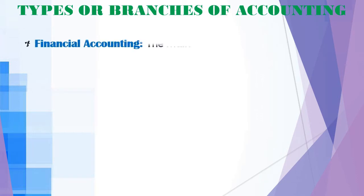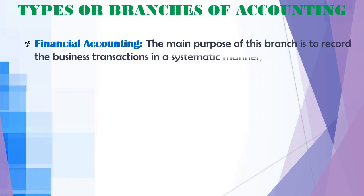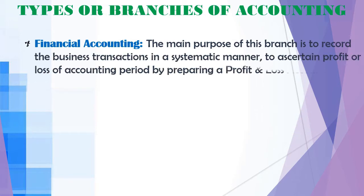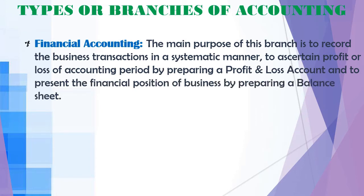The first branch is financial accounting. The main purpose of this branch is to record business transactions in a systematic manner, to ascertain the profit or loss of an accounting period by preparing a profit and loss account, and to present the financial position of the business by preparing a balance sheet.